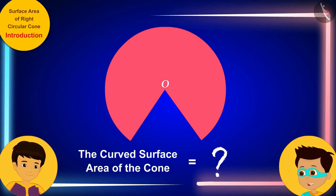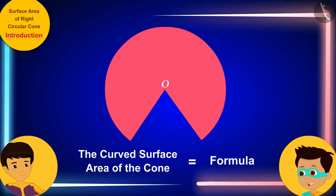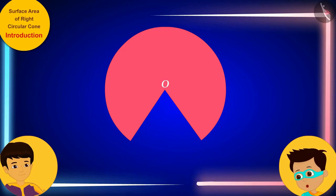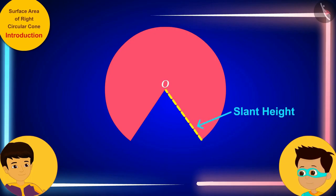Never mind if we don't know it yet. Let us find this formula. Look, Manas. The side where we cut the cone will be its slant height, which we will express with L.